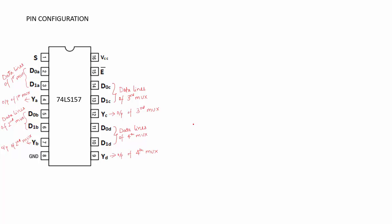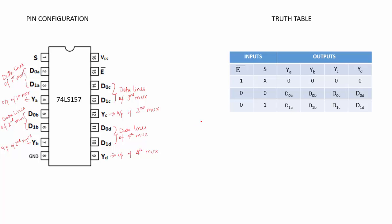Let us now look at the truth table of 74LS157 IC. It has 2 inputs E-bar and S, and 4 outputs YA, YB, YC and YD. When E-bar is 1, irrespective of the select line, the output of each multiplexer is 0 since the muxes are disabled. When E-bar is 0, depending on the select line, either D0 or D1 of that particular mux gets connected to the output.